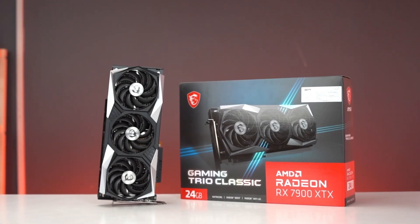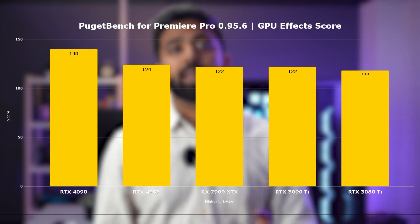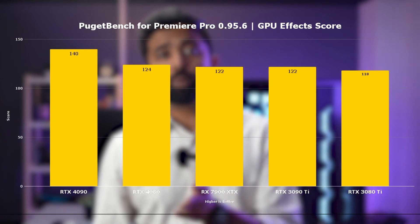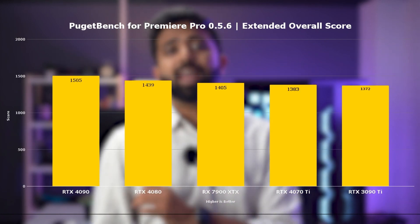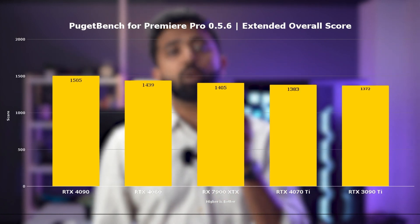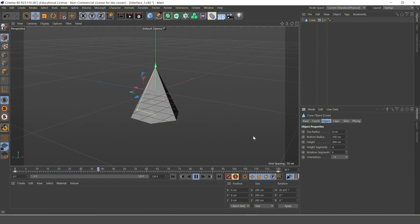Both Nvidia and AMD's latest-gen GPUs are a great option to go for. AMD GPUs give you better value for money, but Nvidia is overall better if you're also going to use other 3D or AI software. But ultimately, the choice is always yours.